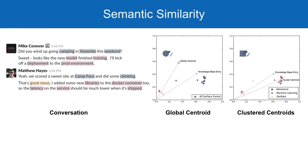Workplace dialogue often interleaves multiple topics throughout a single conversation. Pangloss clusters embeddings for surface forms within these conversations at query time, producing multiple document centroids corresponding to distinct themes. This allows us to produce multiple similarity features and improve named entity disambiguation performance.